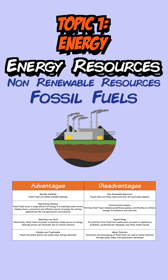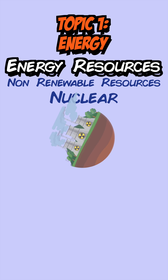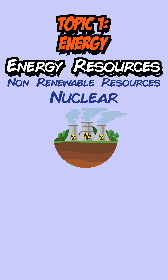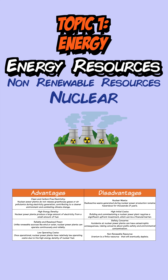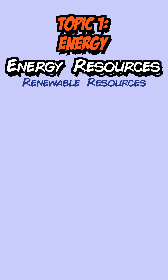The other non-renewable resource is nuclear energy, which releases energy from nuclear reactions. It also produces a lot of energy and no carbon dioxide, but it does produce nuclear waste, which is expensive to dispose of. For renewable resources, most don't produce carbon dioxide and will not run out, but they have their disadvantages.